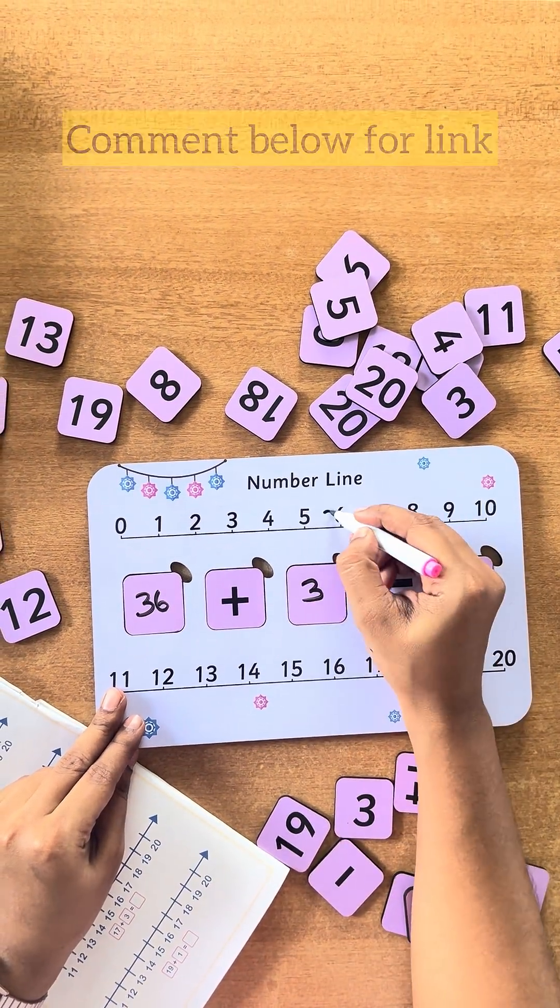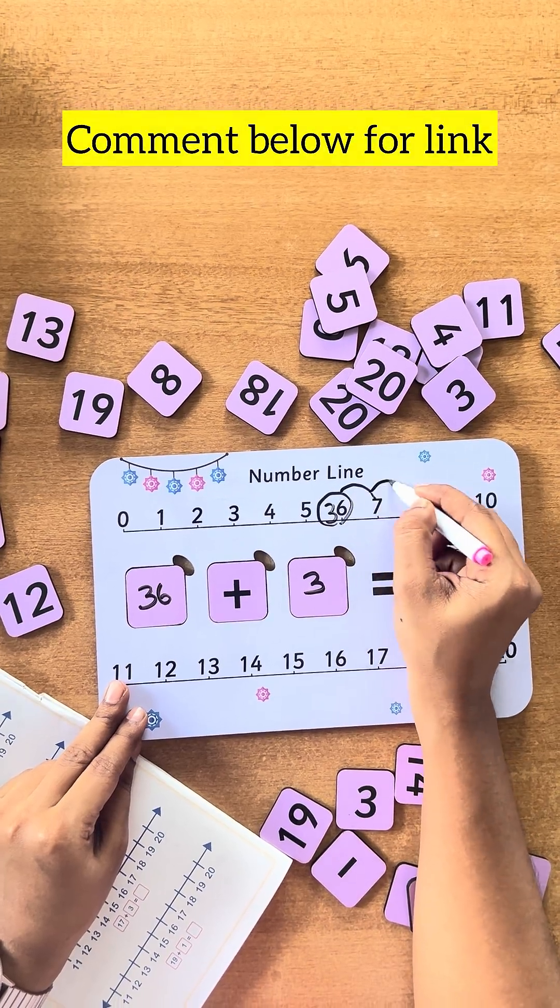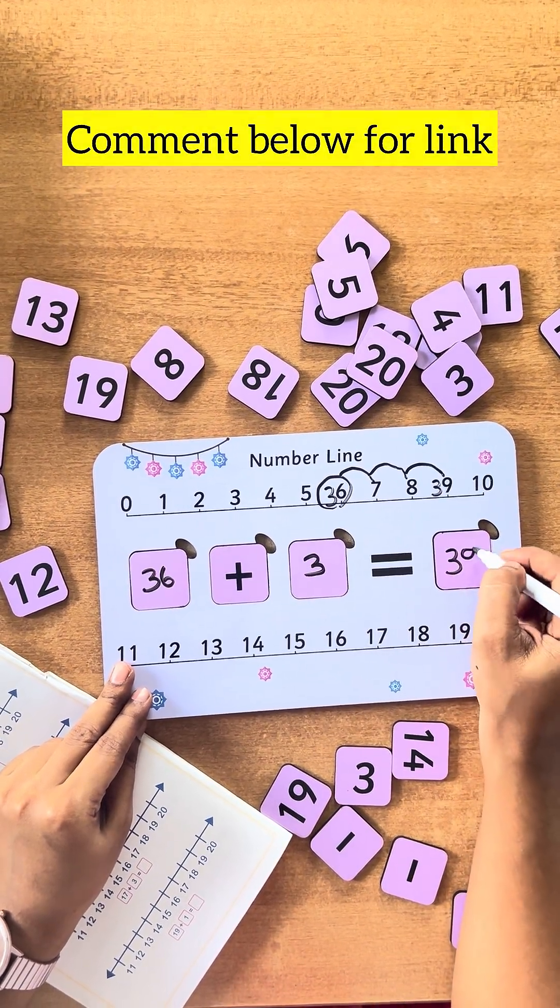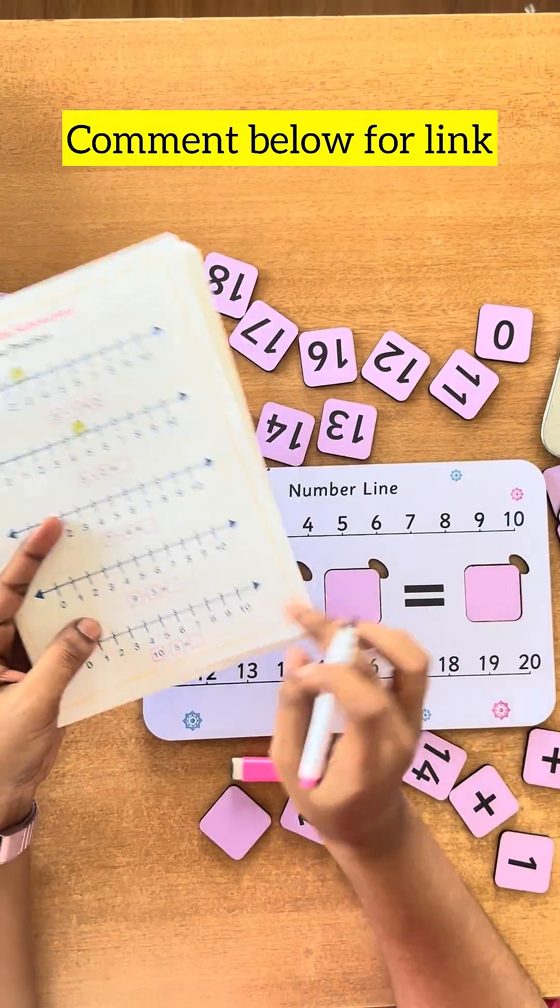36 plus 3, let's put 3 beside 6 and the frog jumps three steps forward and the answer would be 39.